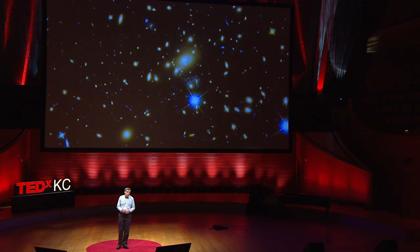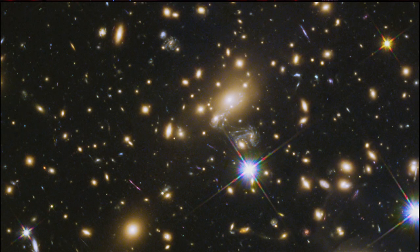Yet Hubble can probe even deeper because of a quirk of nature first described by Albert Einstein that matter can actually bend the path of light. Great assemblages of galaxies such as these contain vast amounts of matter, lumpy matter scattered over a wide volume of space. These act as gravitational lenses to distort, magnify, and focus the light from much more distant sources.